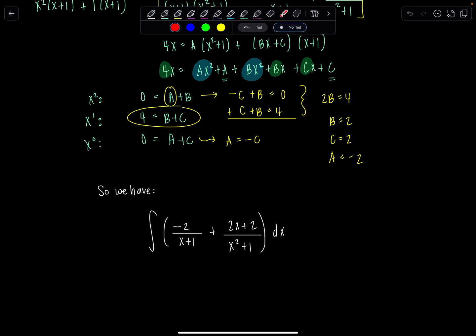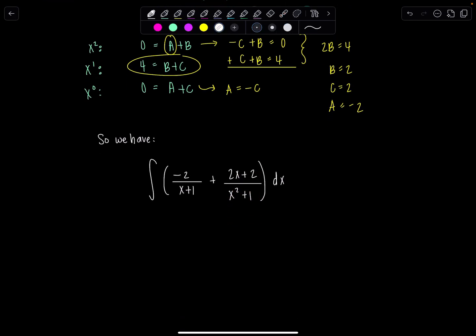Now a lot of the time when you find your partial fraction decomposition on that irreducible quadratic, you end up wanting to split the terms in the numerator. That way we can integrate term by term. So we're going to have three terms total to integrate. So we have negative 2 over x plus 1 plus 2x over x squared plus 1 plus 2 over x squared plus 1 dx.